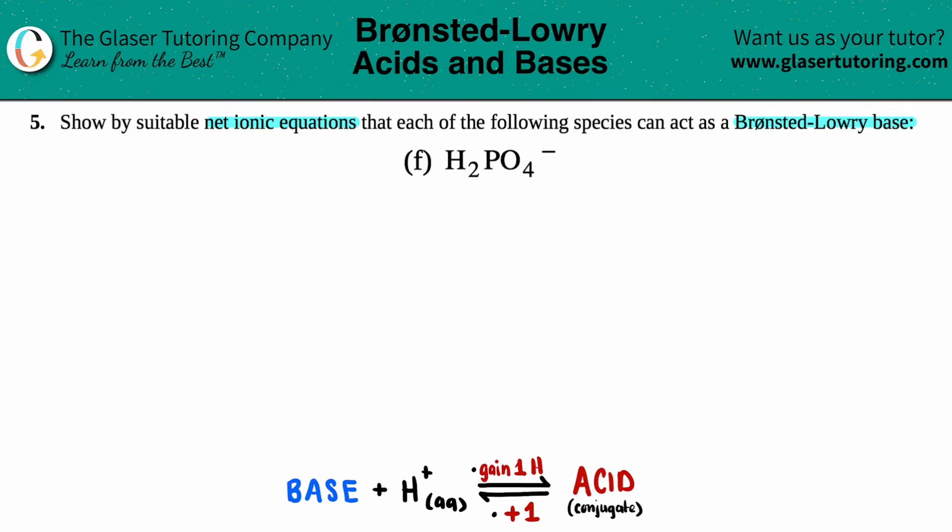Now, just as background information, Brønsted and Lowry were two scientists back in the day that came up with the same idea. They didn't know of each other. They worked on this independently, but they came to the same conclusion. They discussed acids and bases.